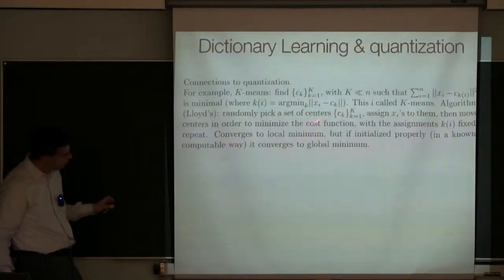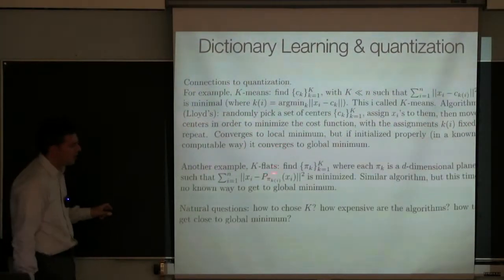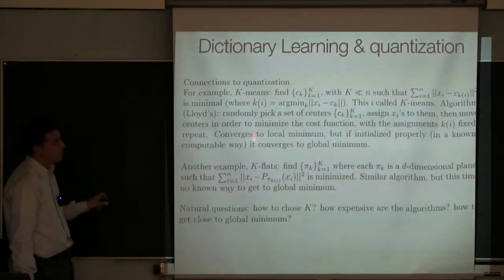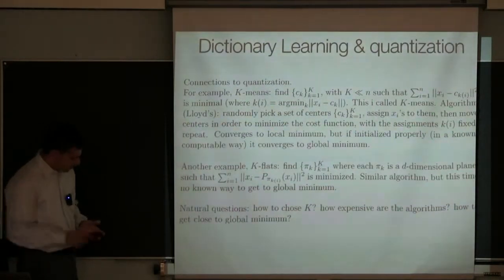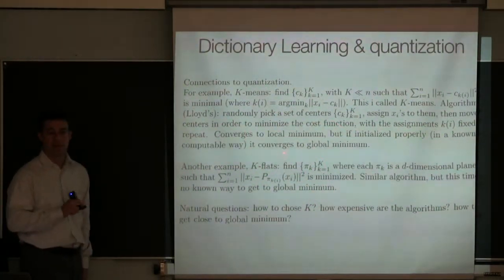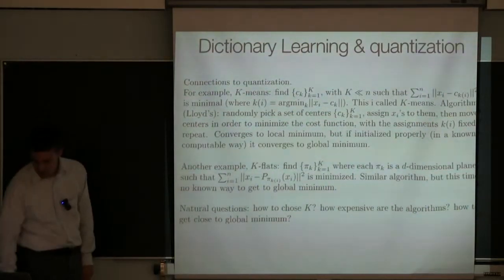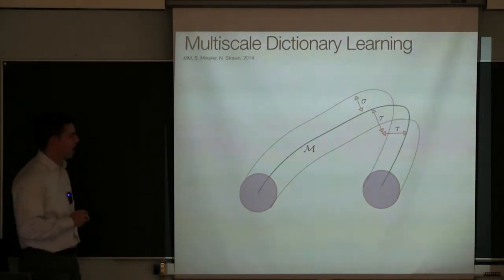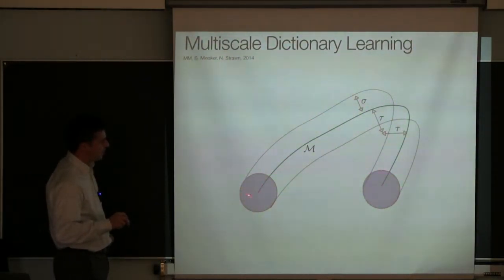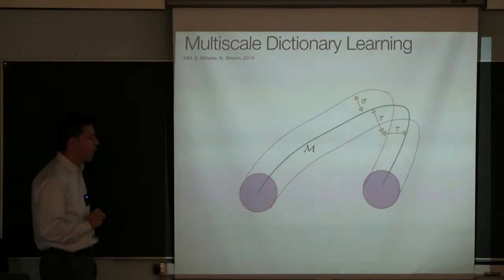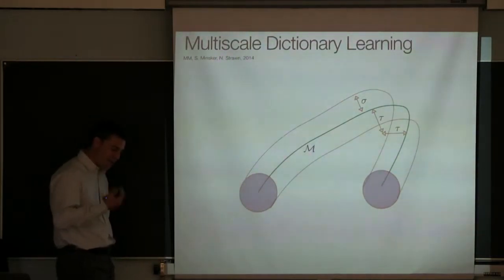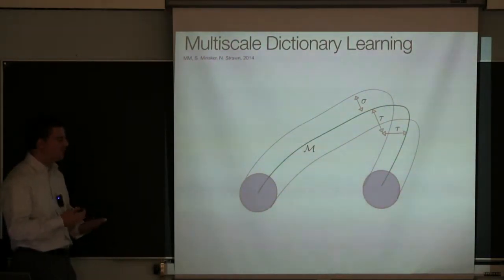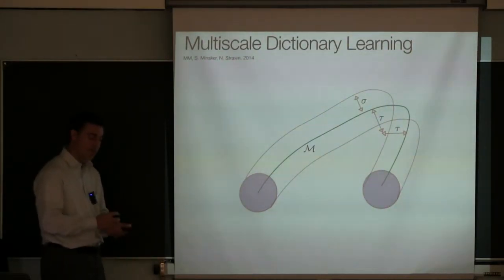There is not much known about this. Some recent work by Lorenzo Rosasco and his collaborators — Kanas and Tommy Podge at MIT — answers some of these questions: how to choose capital K in a principled way. Oftentimes when these algorithms are run, no hypothesis is made on the data, which is why it's hard to prove things. We're going to make assumptions about low intrinsic dimensionality of the data. As I tried to convince attendants yesterday, we can measure the intrinsic dimensionality of many data sets, and that intrinsic dimensionality is often very low.